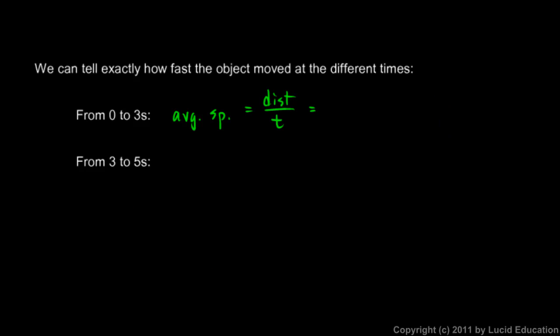So the distance is three feet, and the time is three seconds. Three over three is just one. In other words, those threes cancel out and we're left with one, but the feet and seconds are still there. So it's one foot per second. That's how fast it was moving during the first three seconds.